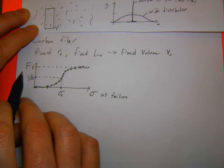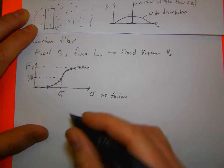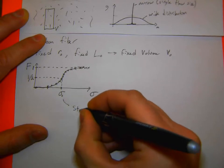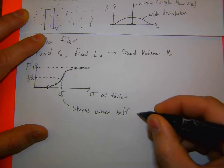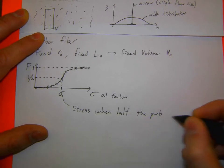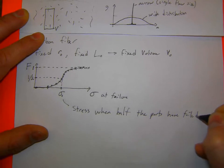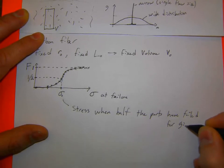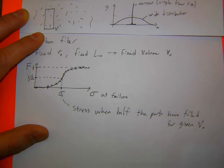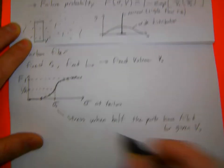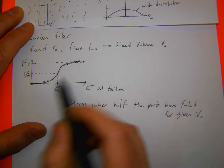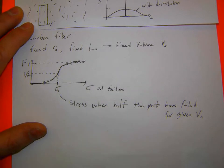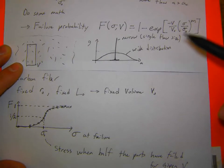Once we have this type of failure plot, σ₀ is the stress when half the parts have failed for a given part size at a given reference volume V₀. This is our reference volume and reference stress. This isn't a particularly useful curve to look at directly, so I'm going to show you a reorganization of this equation.